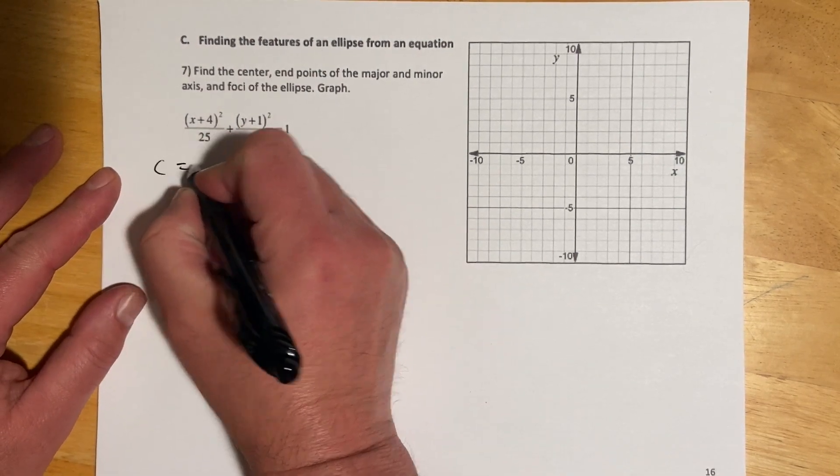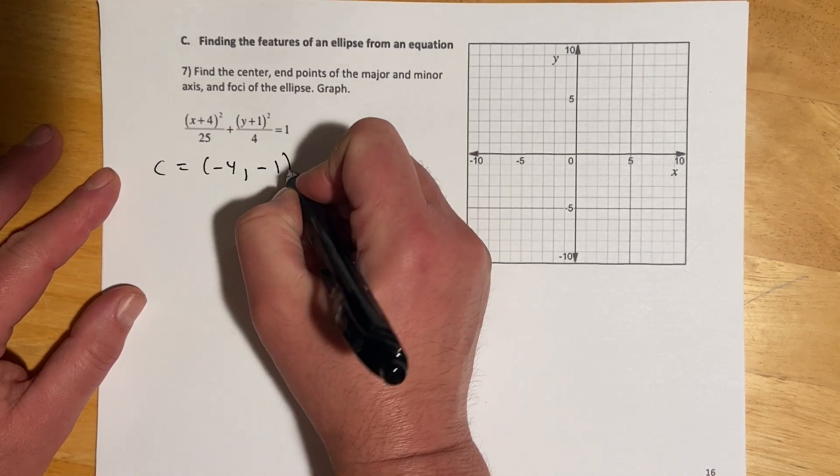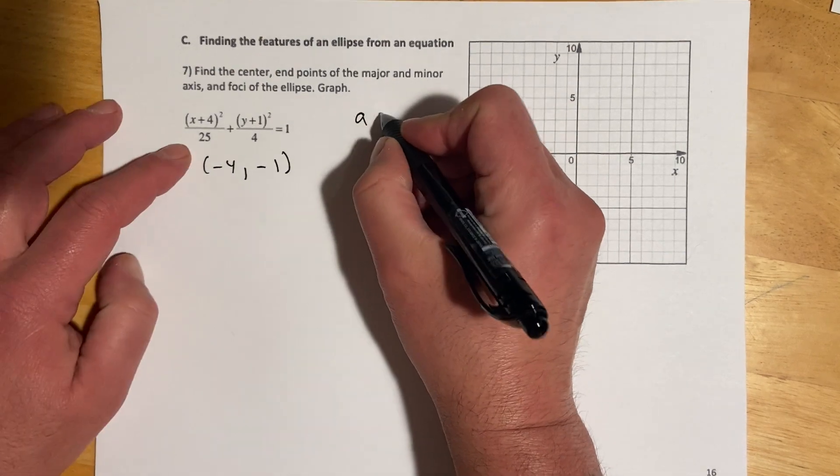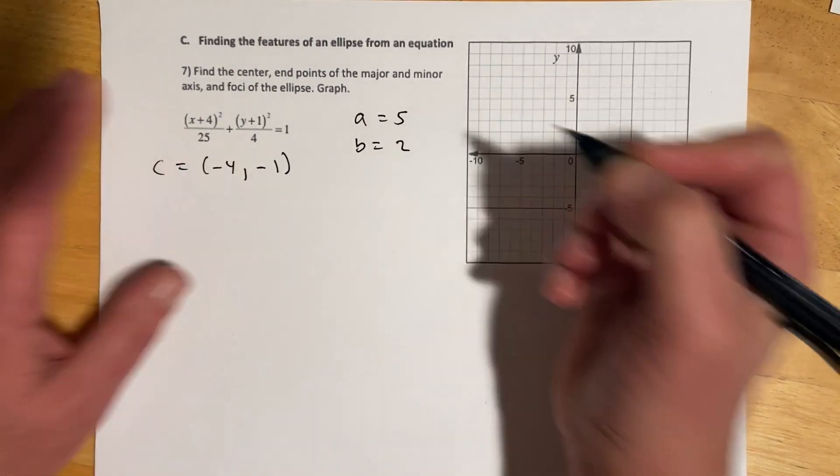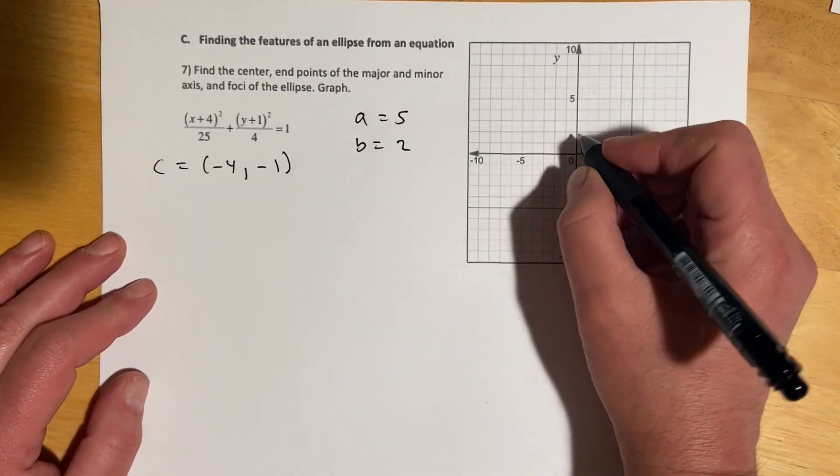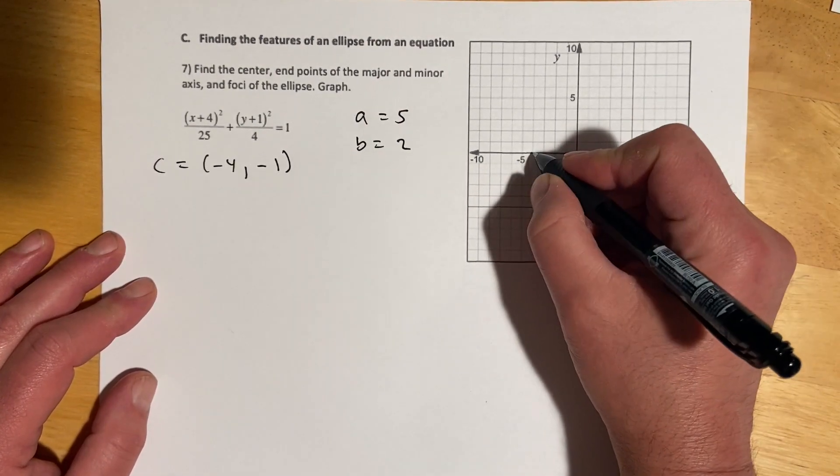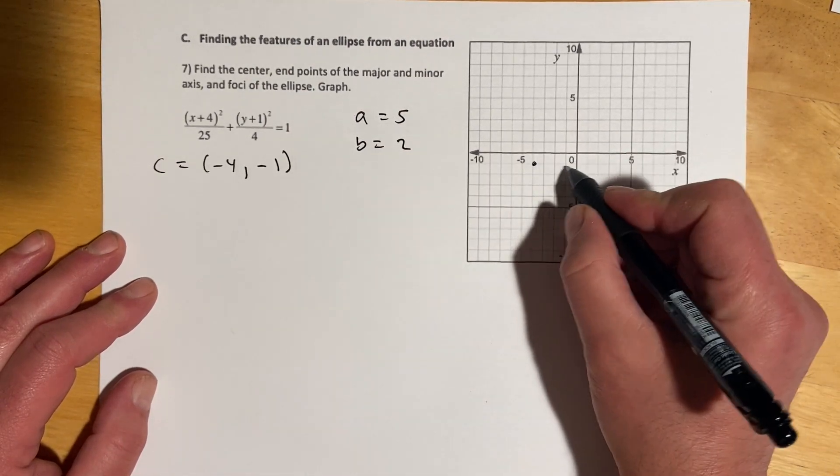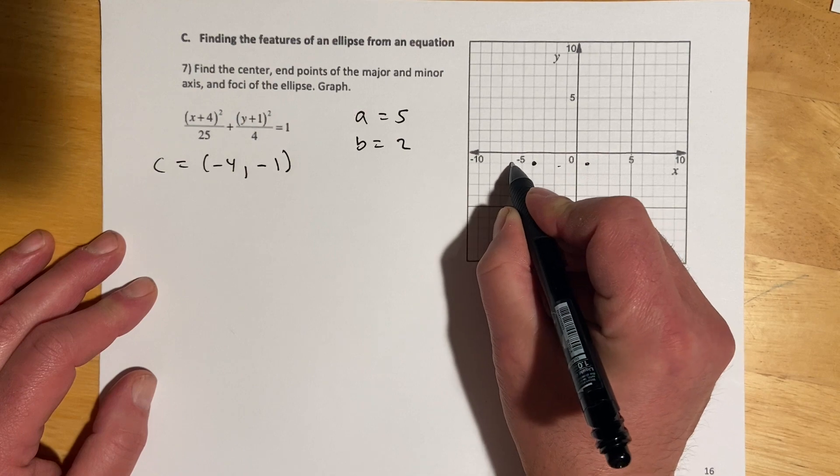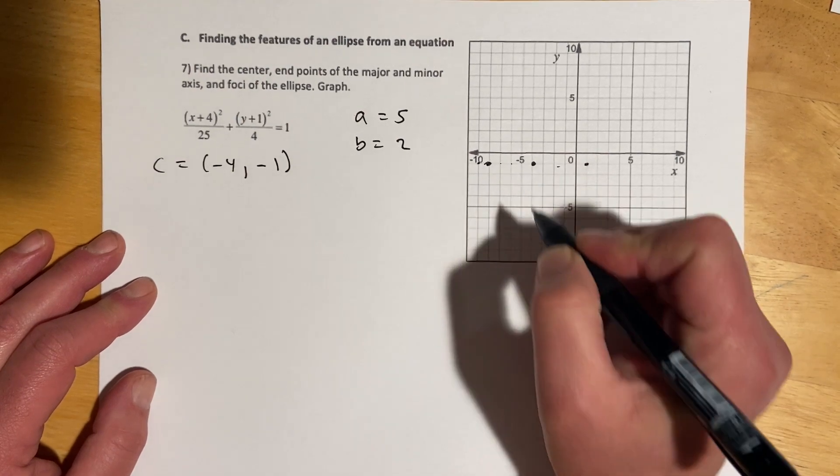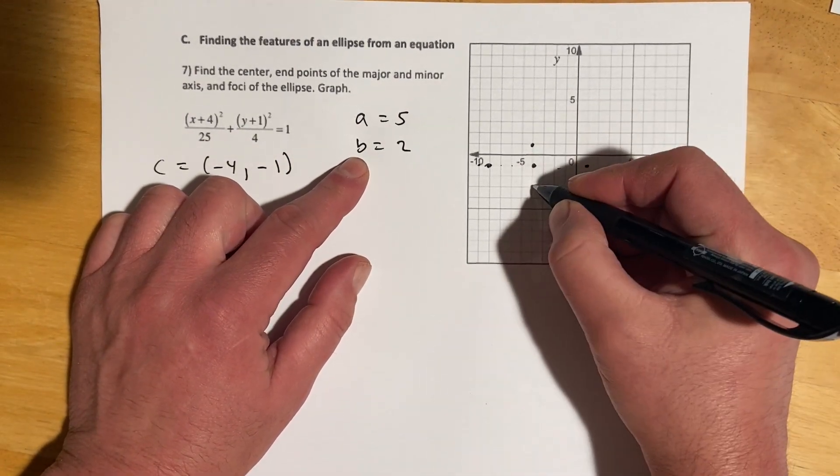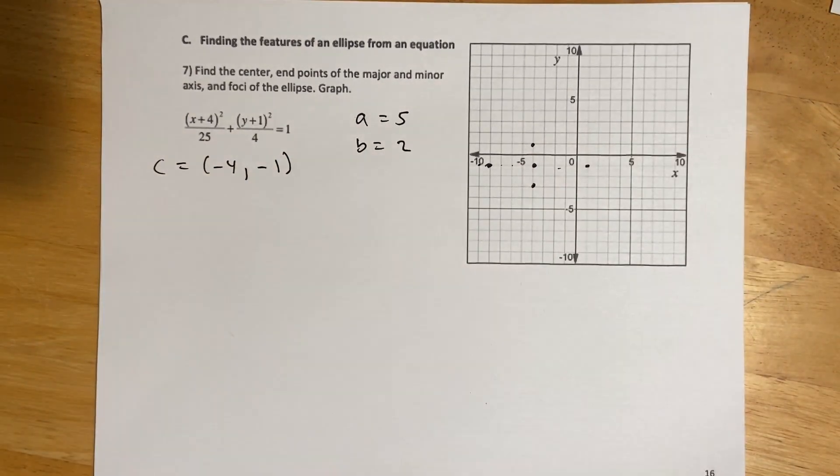So that is negative 4, negative 1, and then a is going to be 5, and b is going to be 2. So, let's get this thing graphed. Let's see, center is at negative 4, negative 1 right there, a is 5, so that puts us here, and 1, 2, 3, 4, 5. So, right there, and then b is 2, so up 2, and down 2.